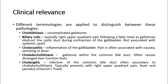Chololithiasis refers to uncomplicated gallstones. Biliary colic is typically right upper quadrant pain following a fatty meal, as gallstones obstruct the cystic duct during contraction of the gallbladder; not associated with systemic upset. Cholecystitis is inflammation of the gallbladder; pain is often associated with nausea, vomiting, or fever. Choleticolithiasis is where there is a gallstone within the common bile duct, often causing deranged liver function tests. And cholangitis is infection of the common bile duct, often secondary to choleticolithiasis, typically presenting with right upper quadrant pain, fever, and jaundice — the Charcot's triad.